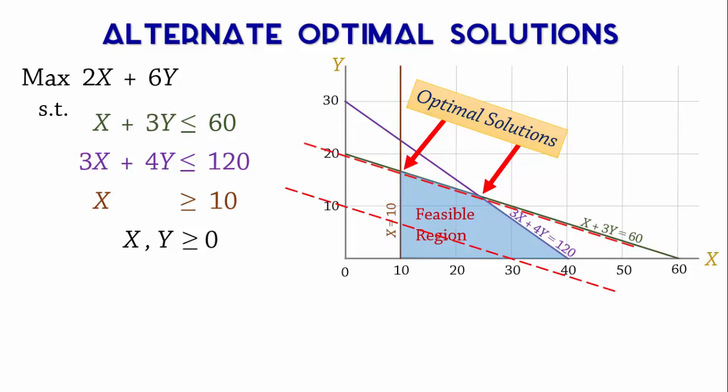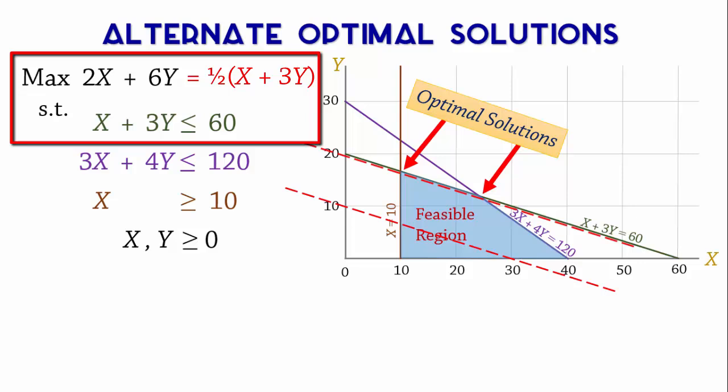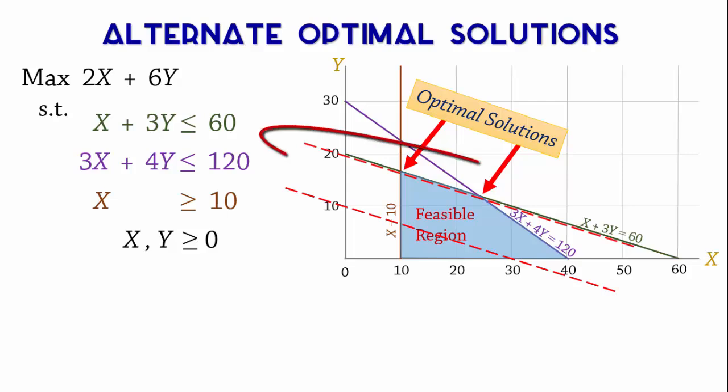Generally, this situation occurs when the objective function line is parallel to a binding constraint. Note that the objective function and the first constraint line have the same slope, so they are parallel. That is why the objective function line coincides with the constraint line here.